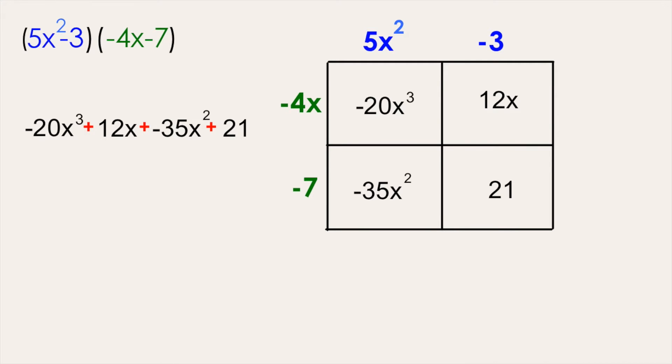We have no like terms to simplify in this polynomial, but you do want to write your final polynomial in standard form, meaning the order of the exponents should go from largest to smallest. So the term with the exponent x squared should come before the term with the exponent x to the 1.